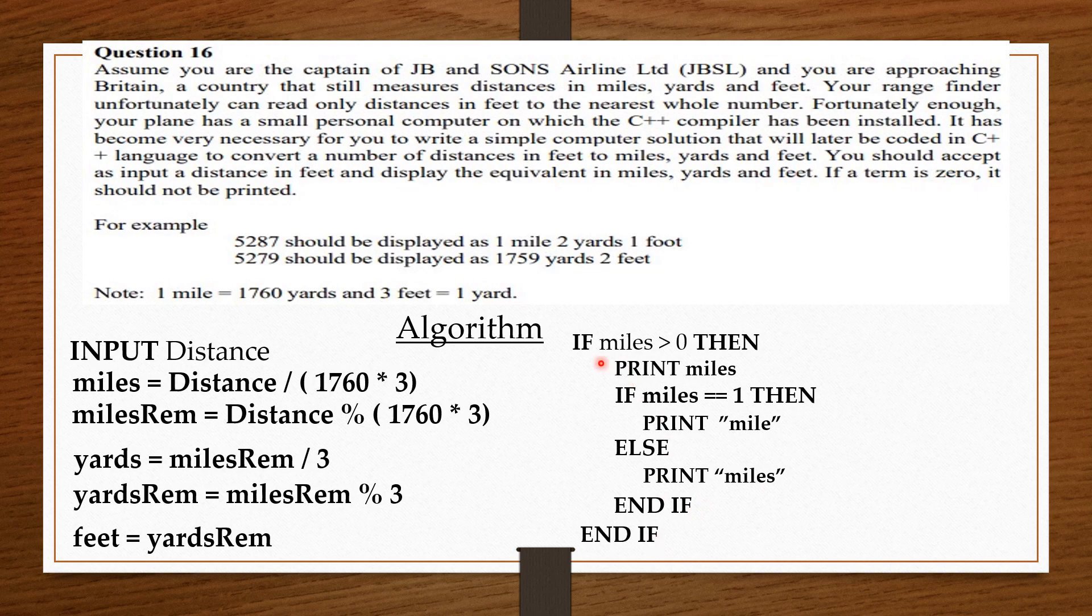Again, we are going to copy that block of if statements, and then change the miles to feet. So, we say, if feet is greater than zero, then print feet. If feet is equal to one, then print 'foot', else print 'feet', end if, end if. So, if mile is one, it should display one mile. If yard is one, it should display one yard. If the foot is one, it should display one foot instead of one feet. So, our grammar is now checked. All right friends, we are through with the algorithm.